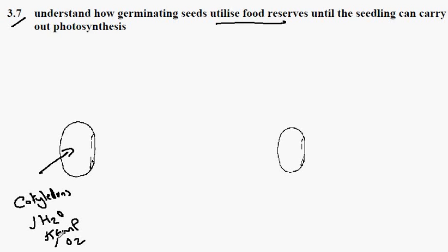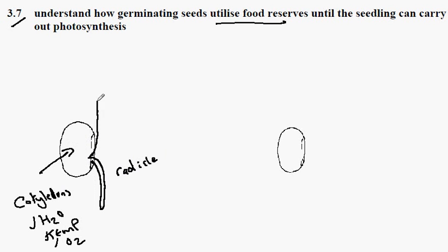Assuming we've satisfied these three conditions, the food stores are used to promote the growth of the embryonic root, which comes out like this. This is called the radicle, and also the embryonic shoot, which grows in the opposite direction like this.